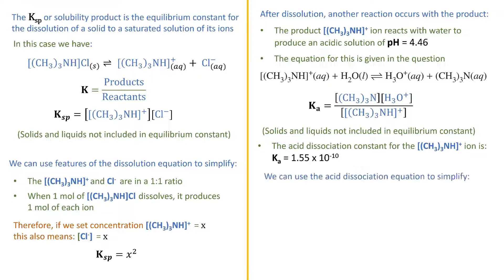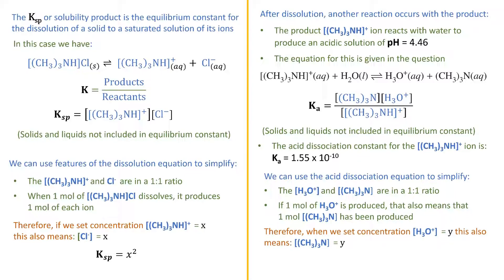We can use features of the acid dissociation equation in order to simplify. The hydronium and trimethylamine are in a 1 to 1 ratio with respect to themselves and the trimethylammonium ion. Therefore, if 1 mole of hydronium is produced, then 1 mole of trimethylamine is also produced. If we set the concentration of the hydronium ions as variable Y, then that means the concentration of the trimethylamine is also equal to Y. This means we can rewrite the expression for Ka as Y squared on X.